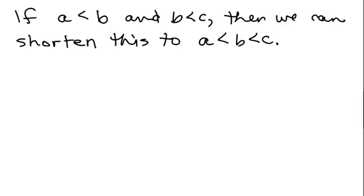We're going to look at the compound inequality: A is less than B and B is less than C. If you have that statement, A is less than B and B is less than C, you can shorten it to write A is less than B is less than C. And if one of these was a less than or equal to — for instance, A is less than or equal to B — then this would become A is less than or equal to B is less than C.